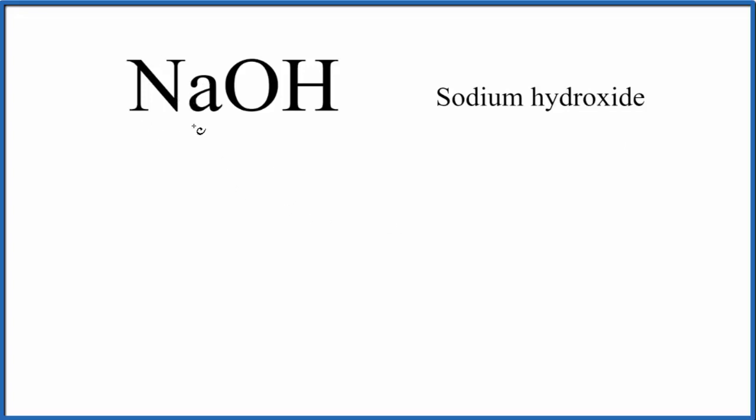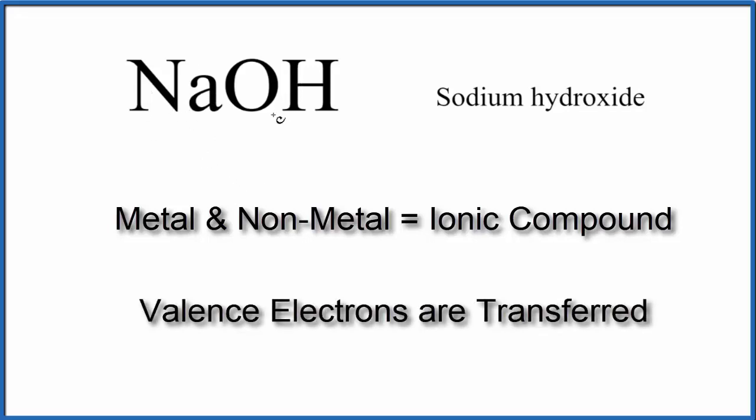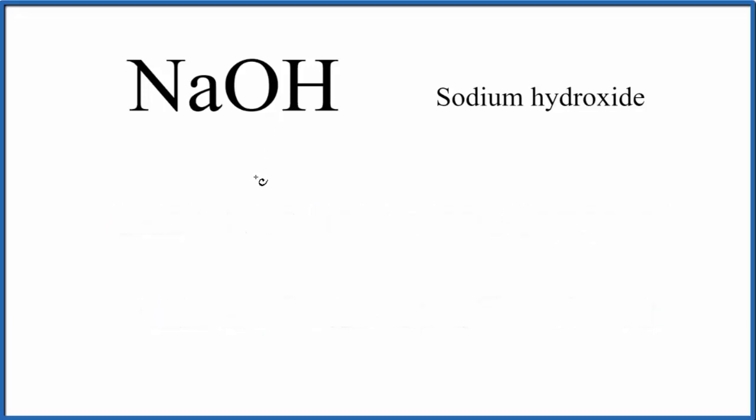When we have a metal, sodium, and non-metals, that's an ionic compound. And when we have an ionic compound, the metal will transfer electrons to the non-metal. So this is a little bit different than how we draw Lewis structures with two non-metals.